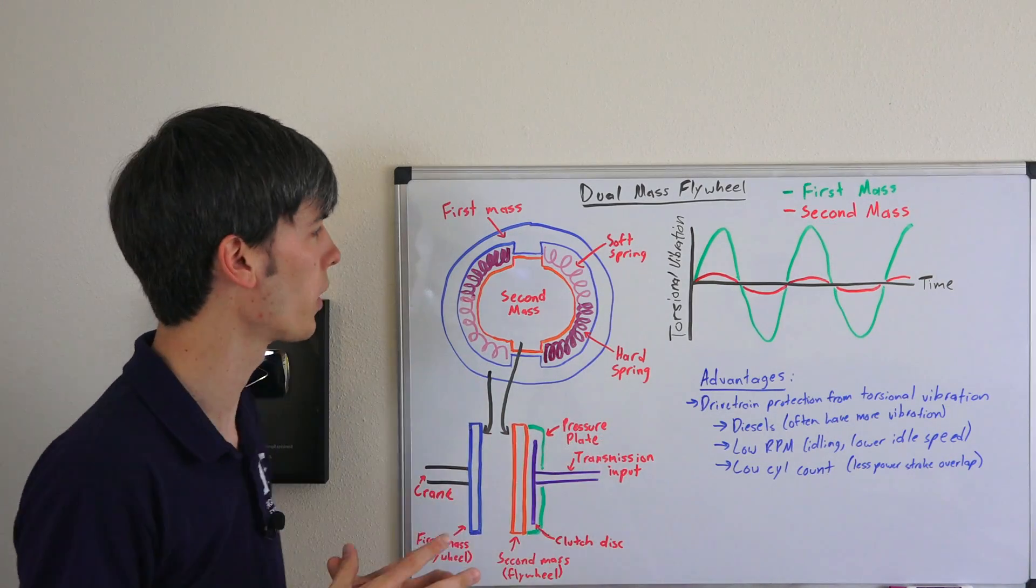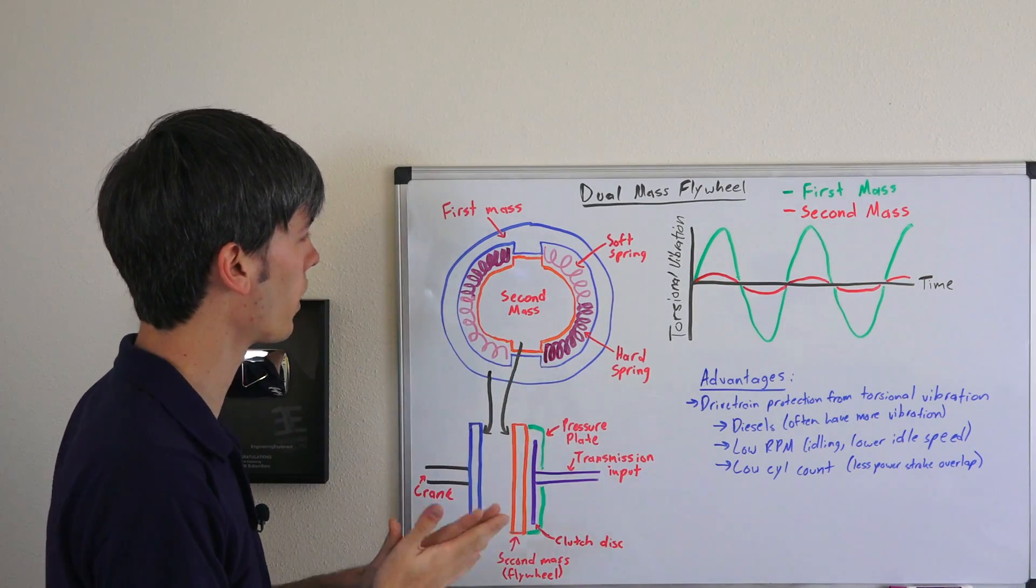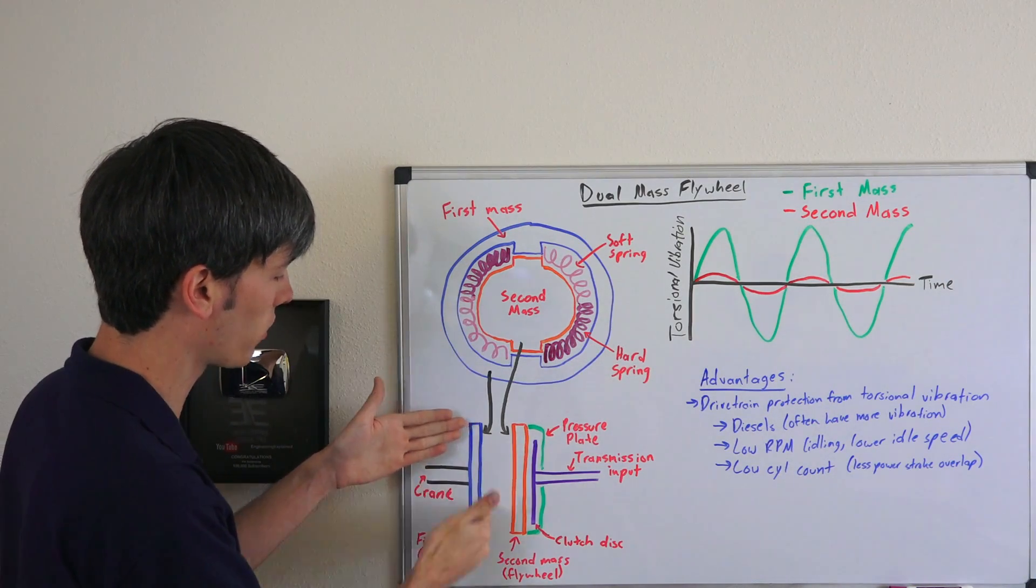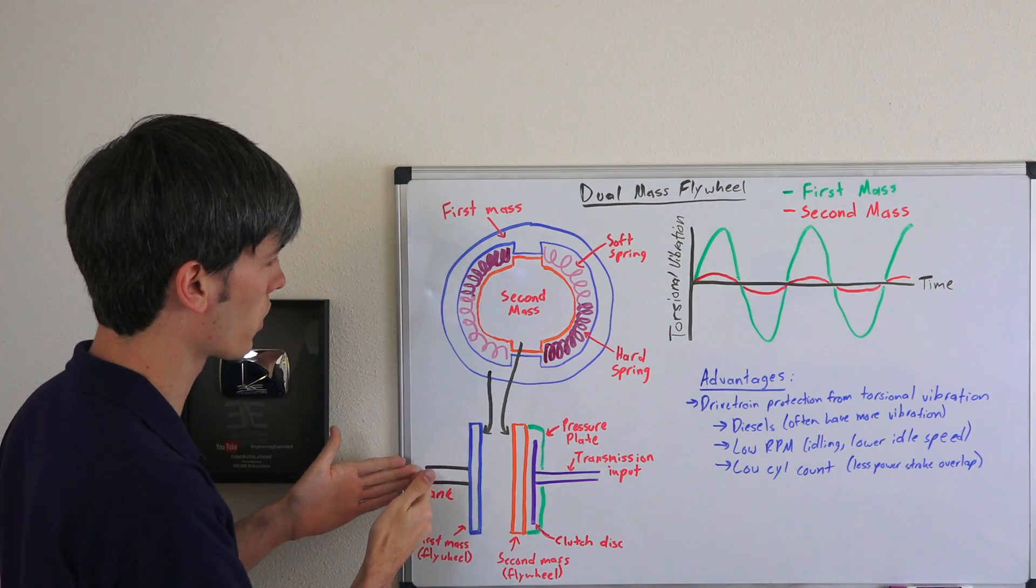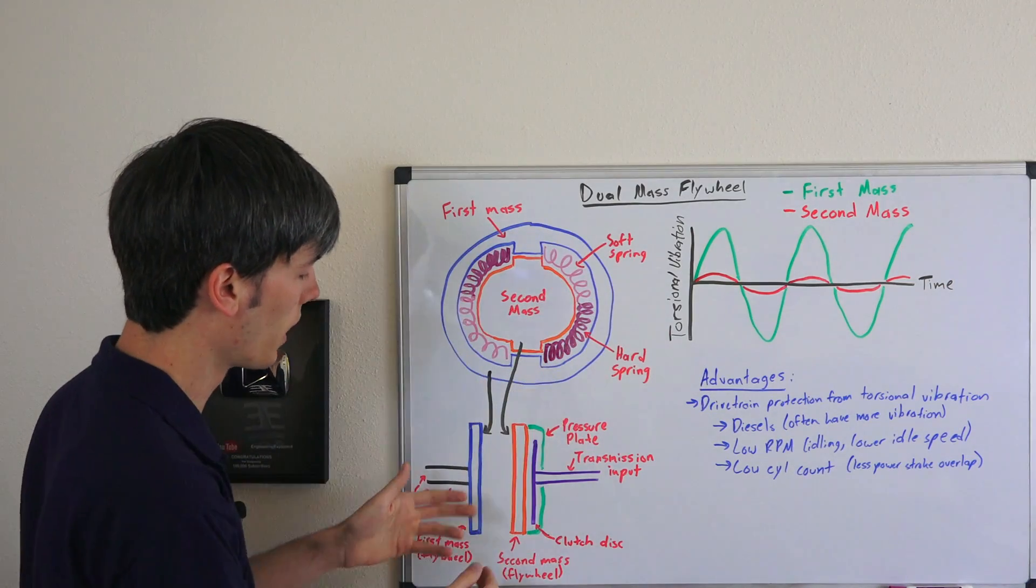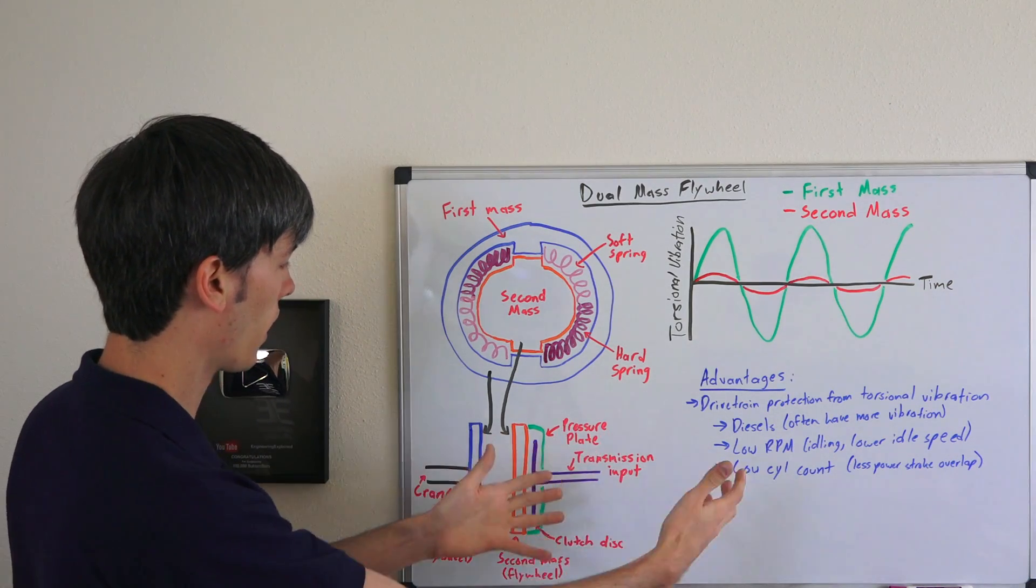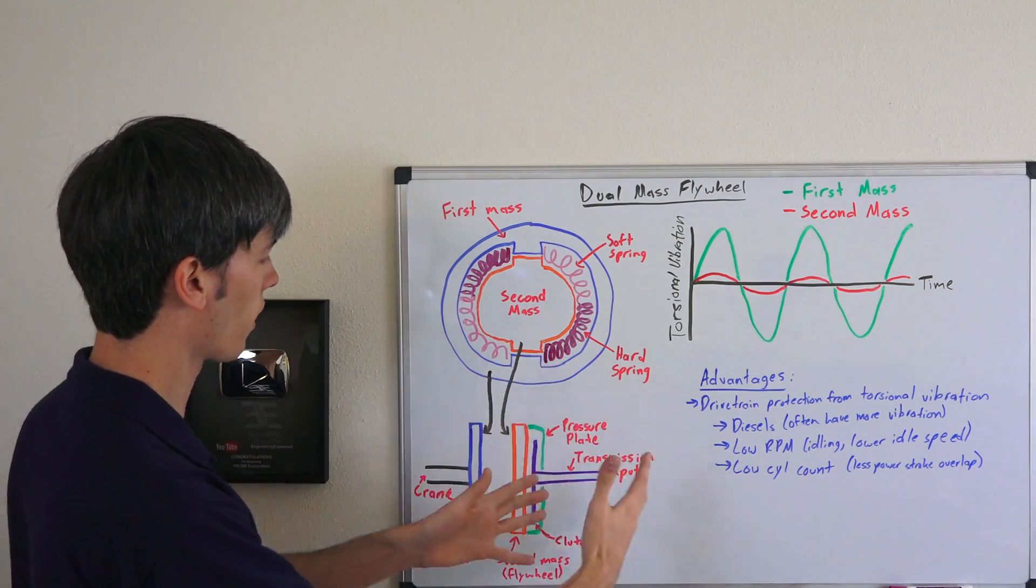Of course there's many more complex ways it can be done, but this is an easy way to understand how it works. The first mass of the flywheel will be attached to the crank, and then the second mass will be attached to what is essentially the transmission.